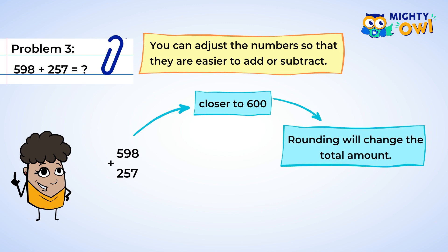Instead, since five hundred ninety-eight is two away from six hundred, we're gonna add the two to the five ninety-eight to change it into six hundred. But that looks easier to add, doesn't it?